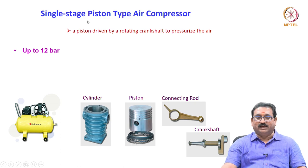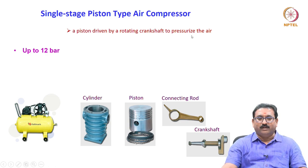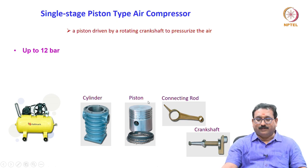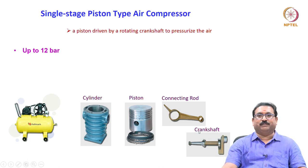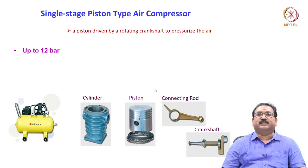We will see the single stage piston type air compressor. The piston is driven by a rotating crankshaft to pressurize the air. In a single piston type compressor, pressure up to 12 bar is possible to obtain. The main elements are: cylinder, piston, piston rings, connecting rod, and crankshaft. These are the very important elements in the piston type compressor. Piston rings prevent leakage.